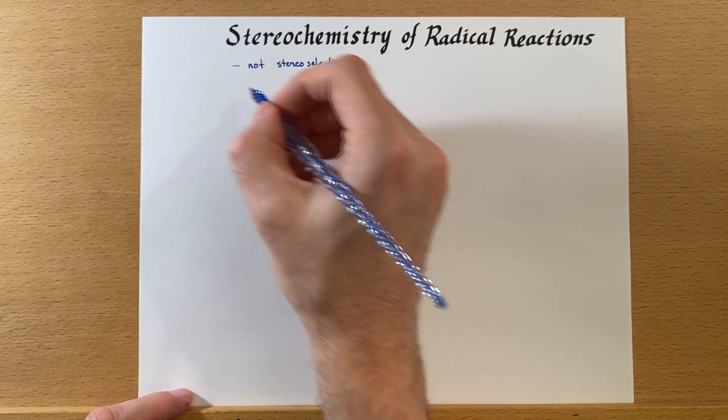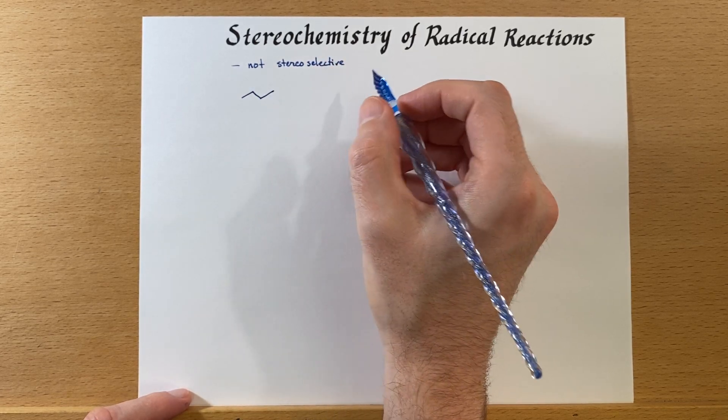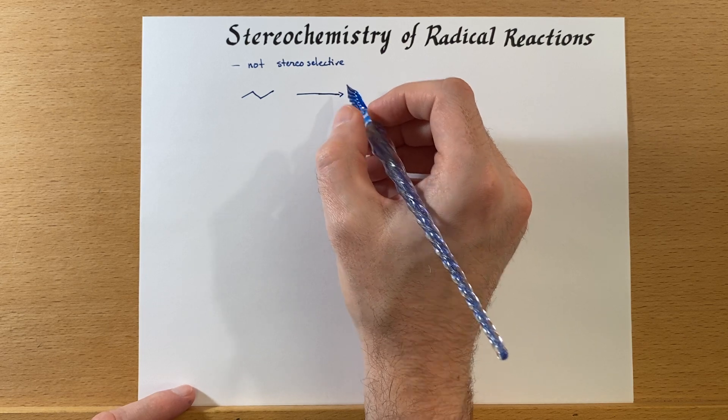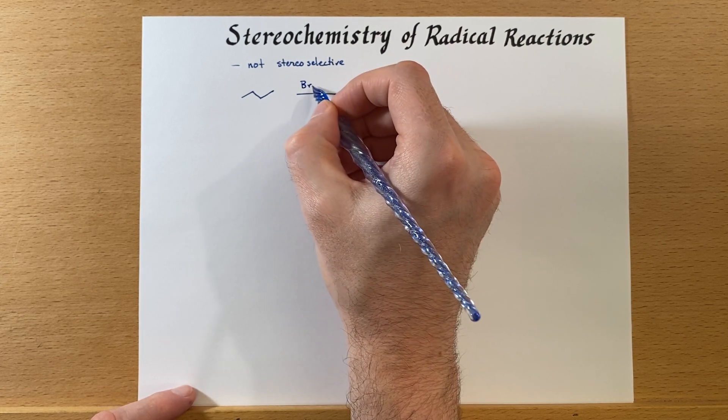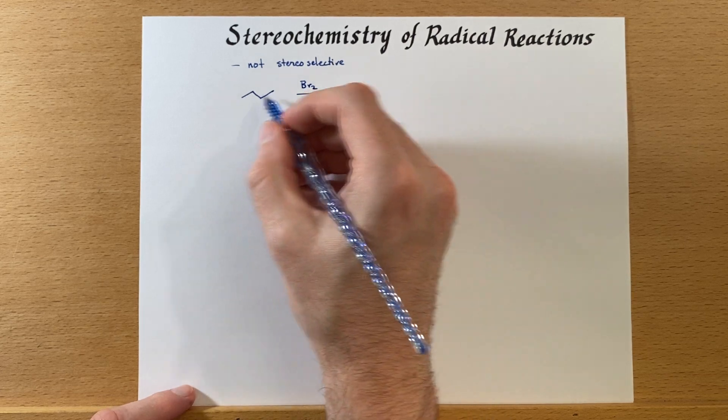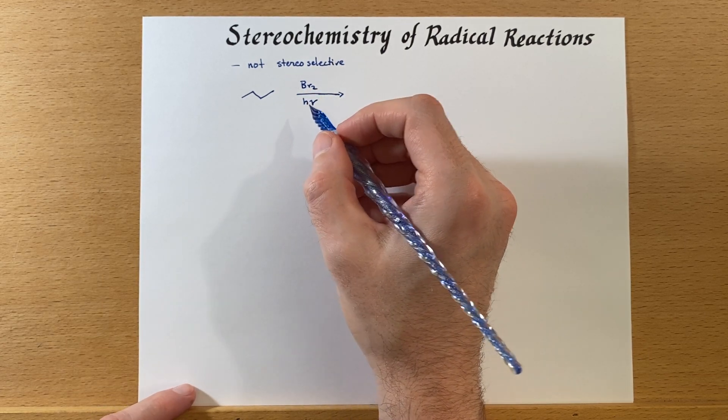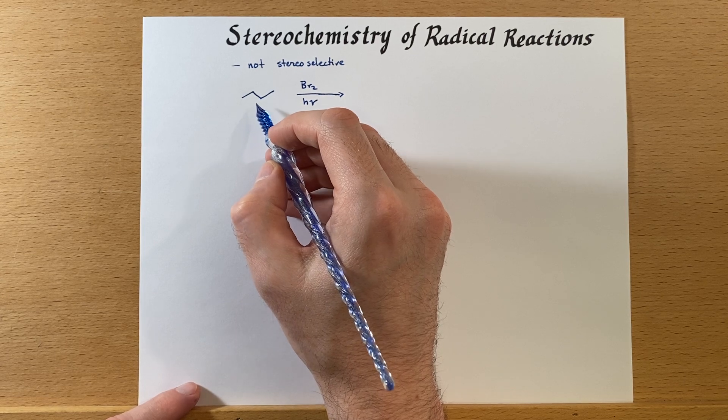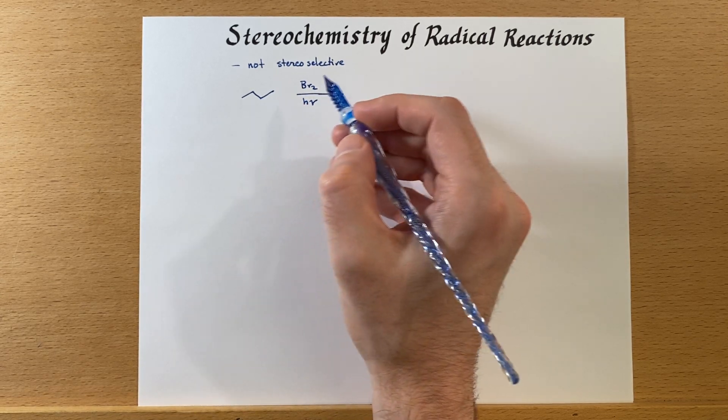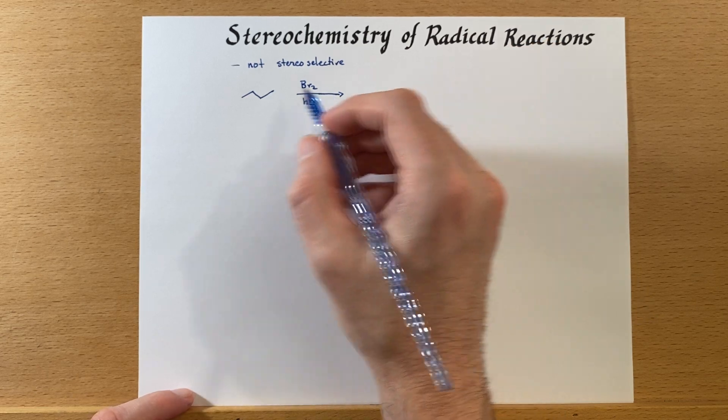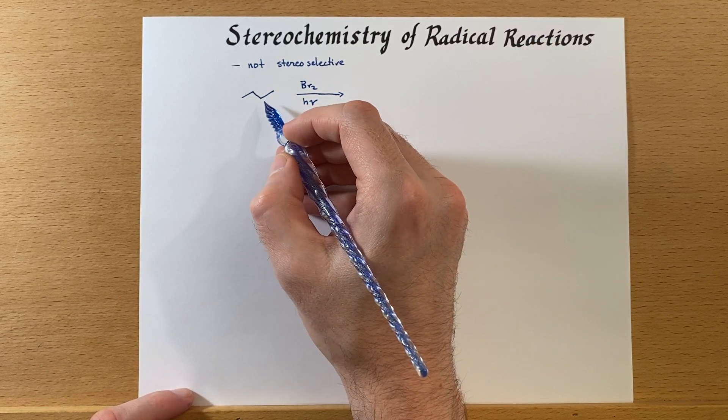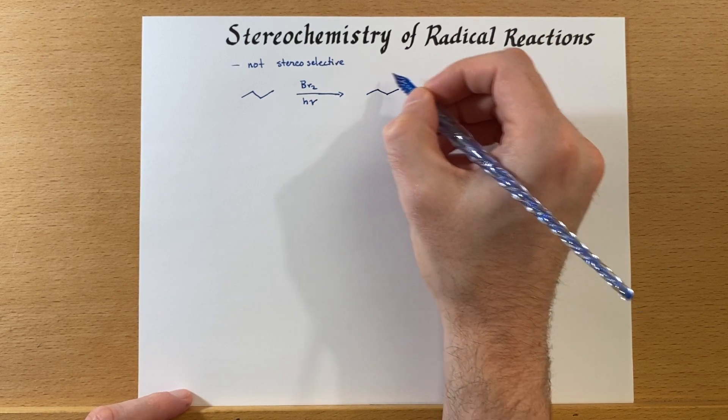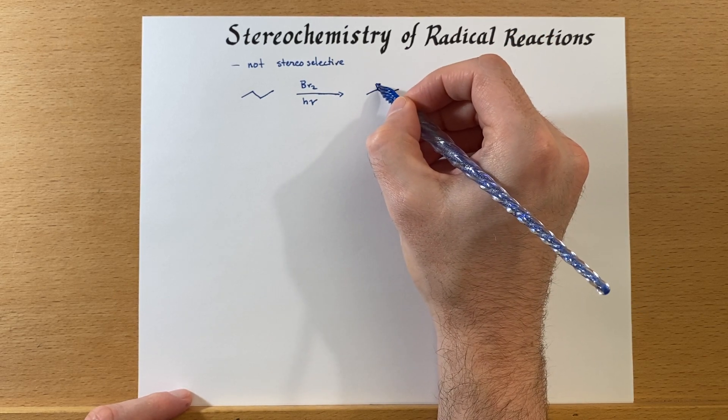We'll go over a couple of examples and talk through exactly why they're not stereoselective. In this case, we're going to add in the secondary position because generating a radical there is more favorable. In butane, there are two possible stereoisomers.